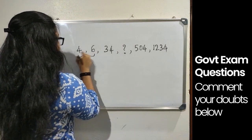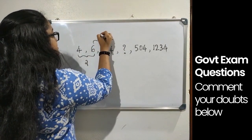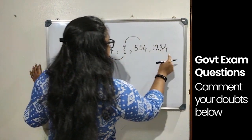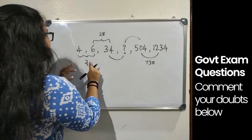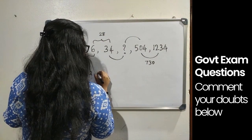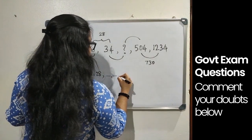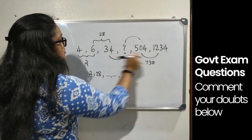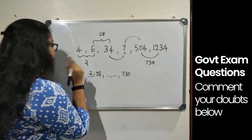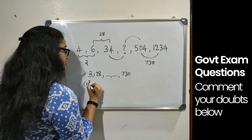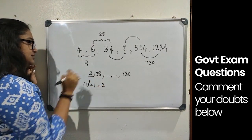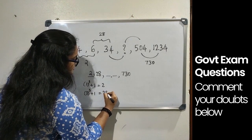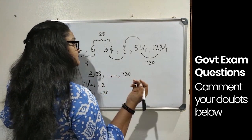Let's check for cube patterns. The difference between the first two terms is 2, which equals 1³ + 1. The difference 28 can be written as 3³ + 1, since 3³ = 27 and 27 + 1 = 28. We also find another term difference of 730, which equals 9³ + 1, since 9³ = 729.